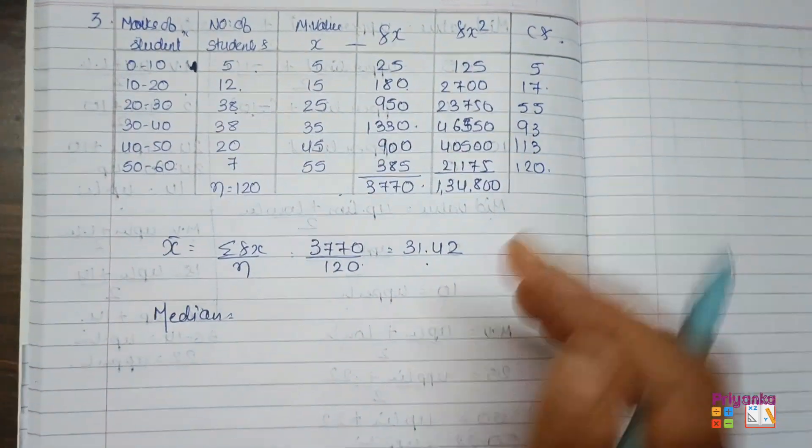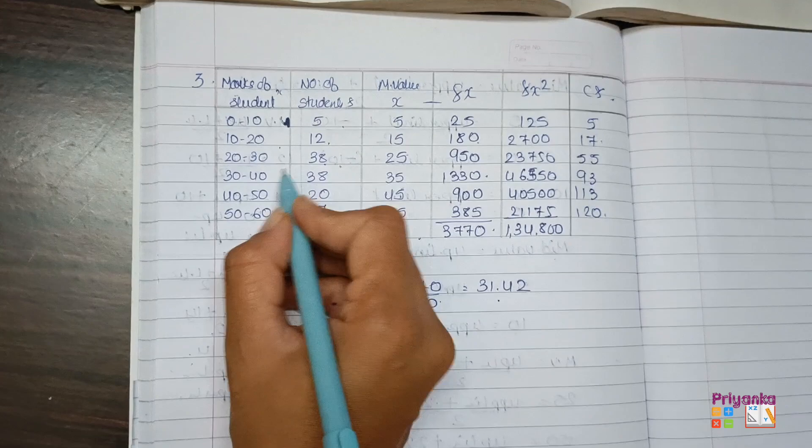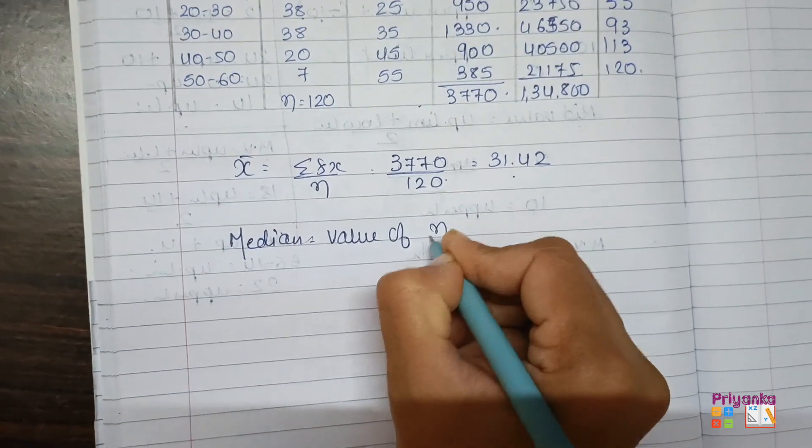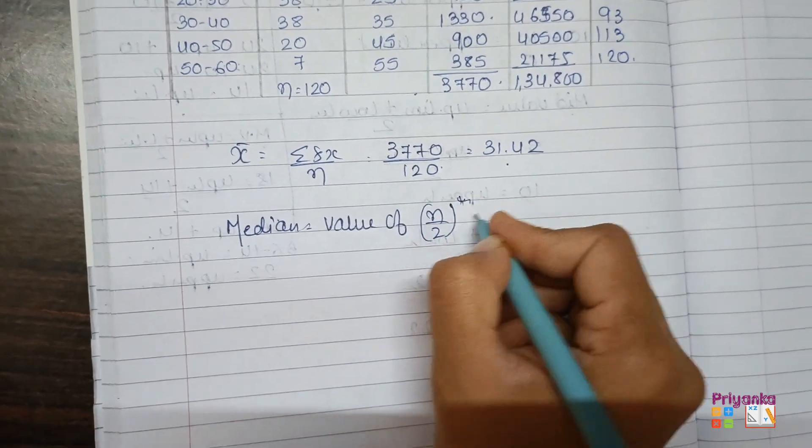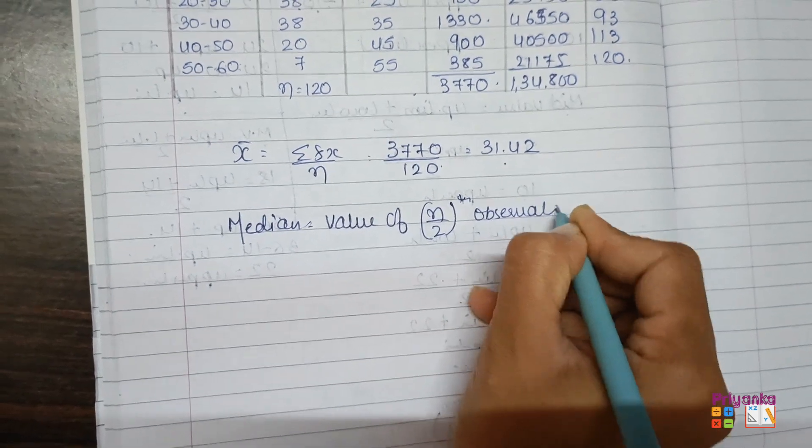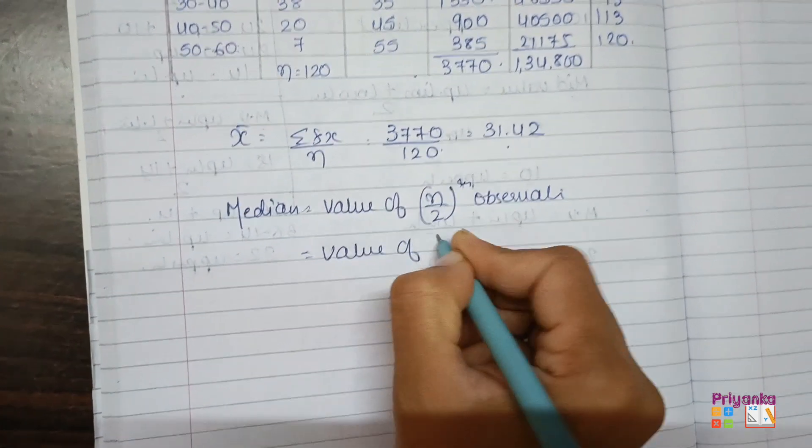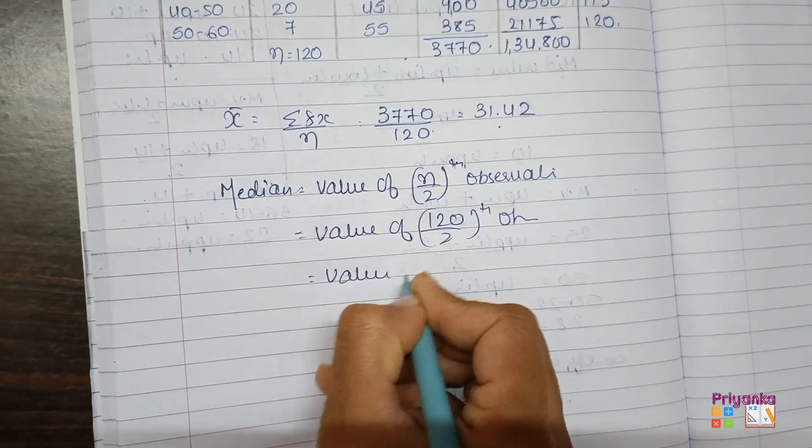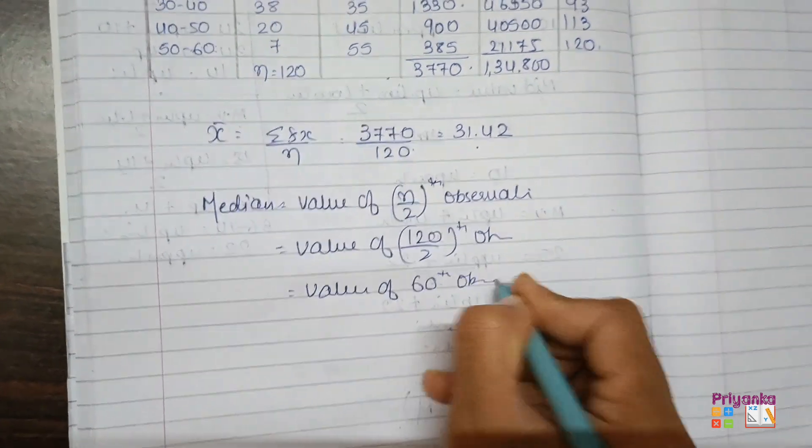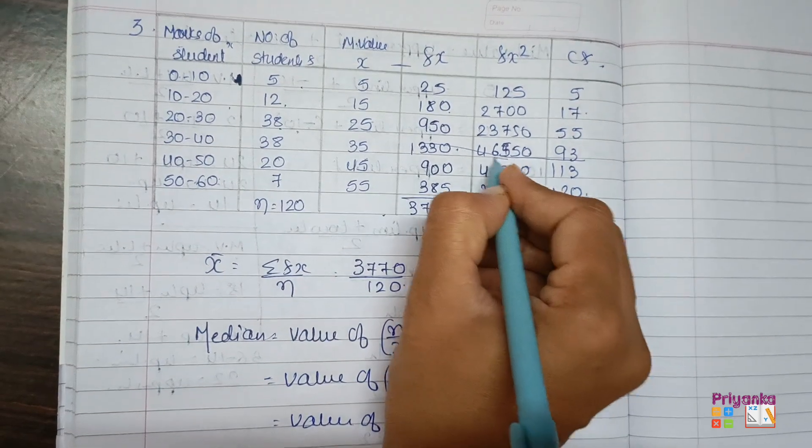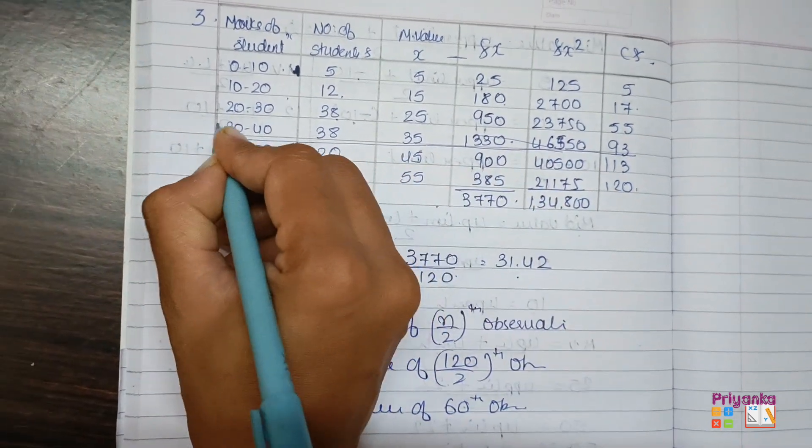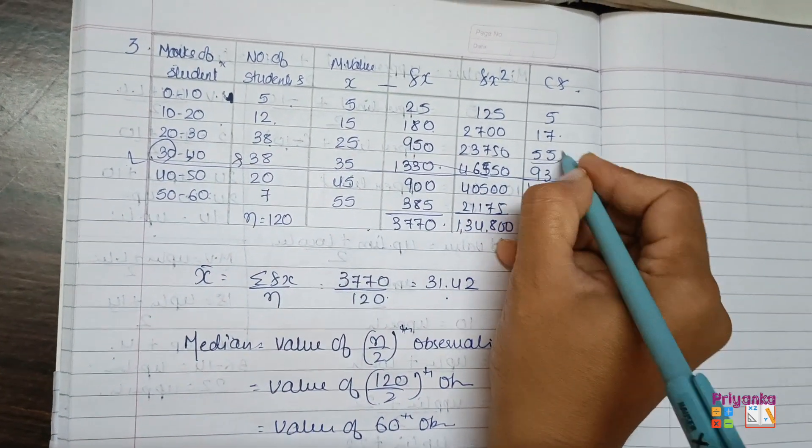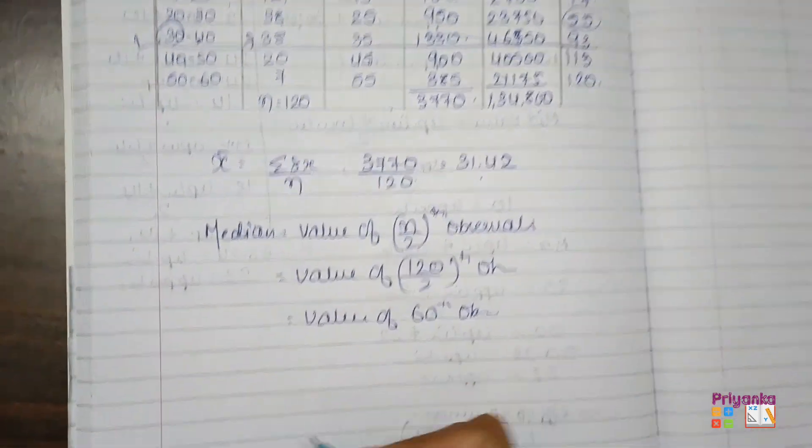So here we get the CF as well. Now let's find out the median because it is continuous frequency distribution. We will use a big formula. So when we do this, just take n upon 2, don't take plus 1. Remember this observation. So here we get 120 upon 2 observation, that is 60th observation. So 60 will come in 93. By mistake, so here we get the lower limit. Then this is the frequency and the CF will be 55.